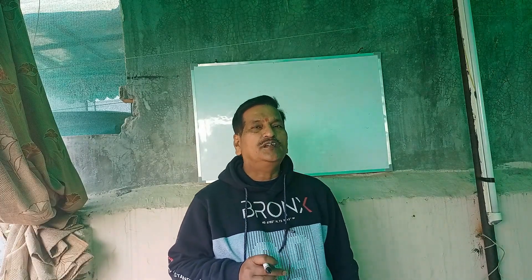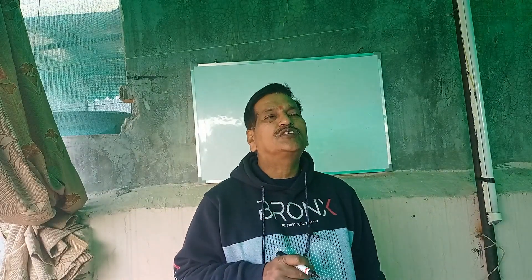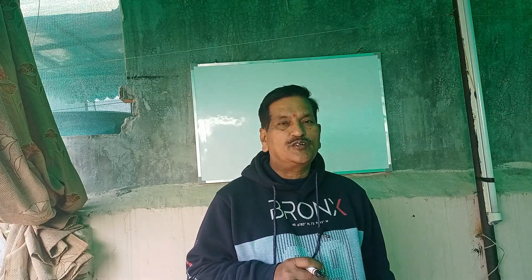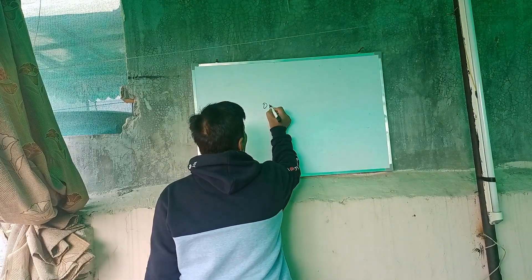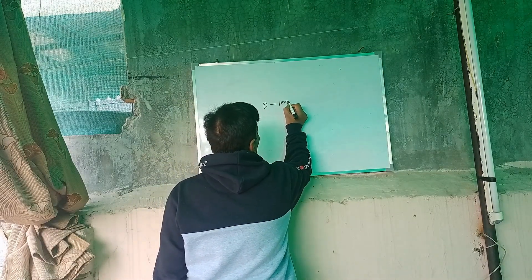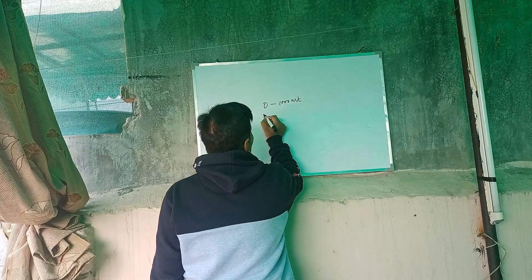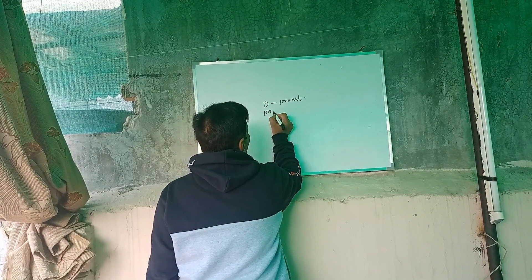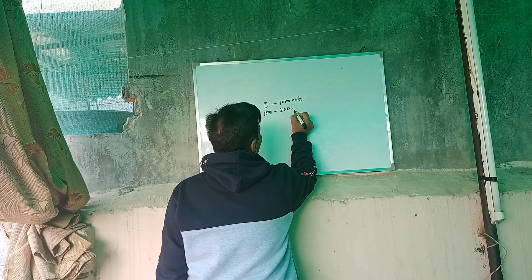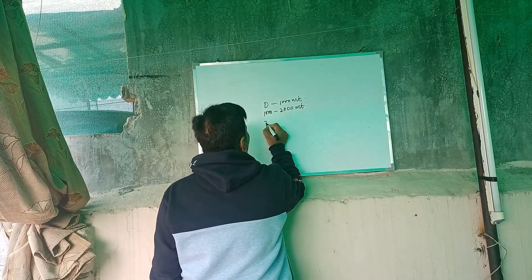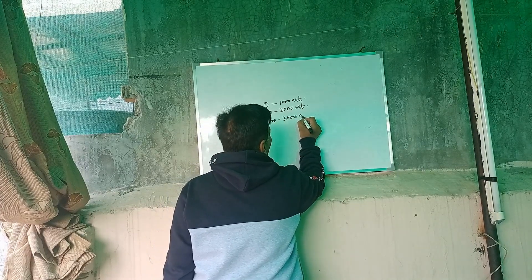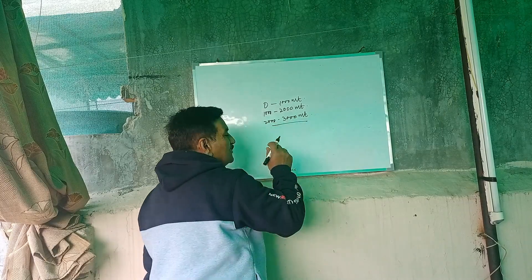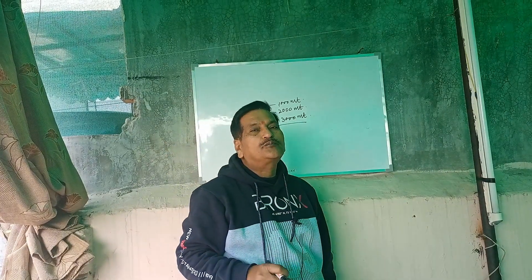The Himalayas mountain, on the basis of height, can be classified into three parts according to geographers and geology: 0 to 1000 meters, 1000 up to 2000 meters, and 2000 up to 3000 meters. This is the classification on the basis of elevation of the Himalayas mountain.